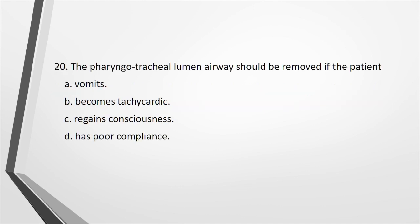Question 20: The pharyngotracheal lumen airway should be removed if the patient: A. Vomits. B. Becomes tachycardic. C. Regains consciousness. D. Has poor compliance.